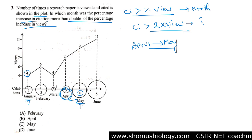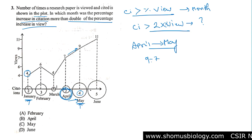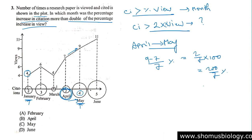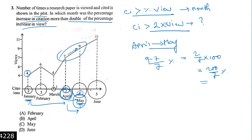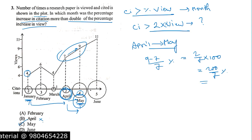Now check views from April to May: views go from 7 to 9, so the increase is 2/7 × 100 = 200/7 %, which is about 28.6%. Since citations increased by 100% and views increased by only ~28.6%, the citation increase is clearly more than double the view increase. The answer is May. Both views and citations spiked — you don't even need a full calculation; IQ is enough to answer this.